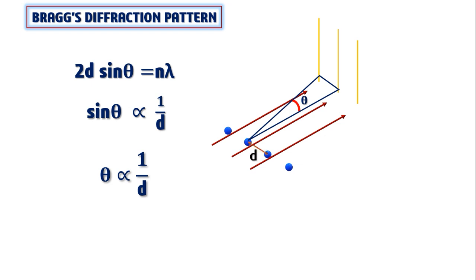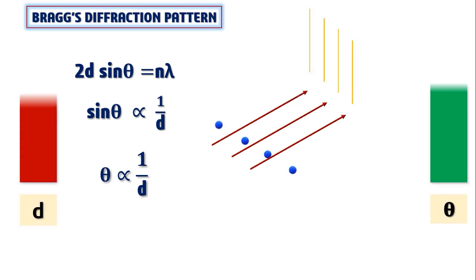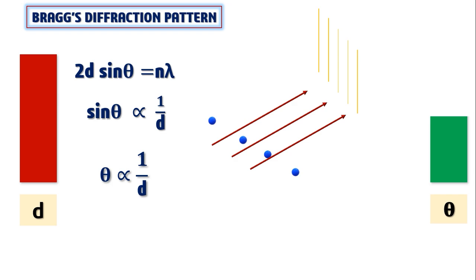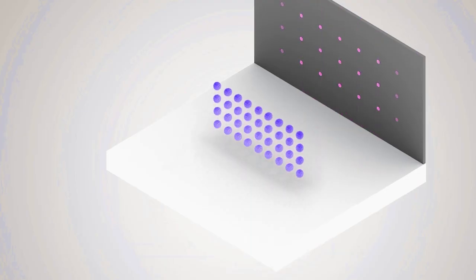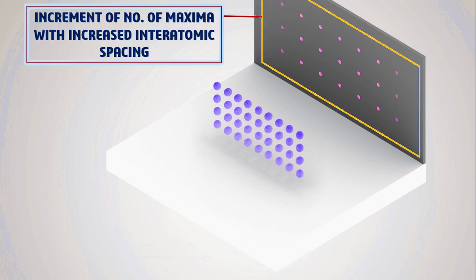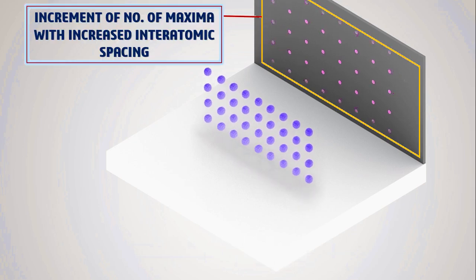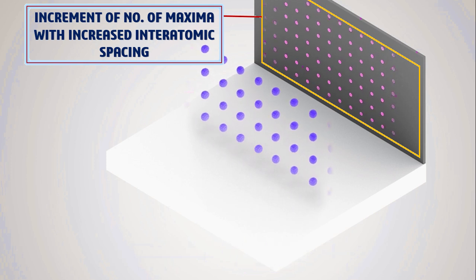Now from the law itself one thing is very clear: with the increase of inter-atomic spacing, the distance between the two maxima decreases. Or in other words, if you are considering a screen of fixed width, then the number of maxima within the screen will actually increase. Hence for diffraction, we get more number of maxima within the screen.